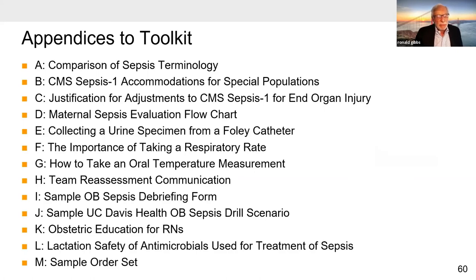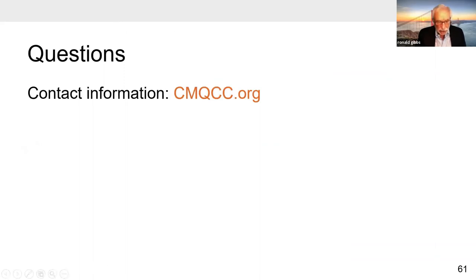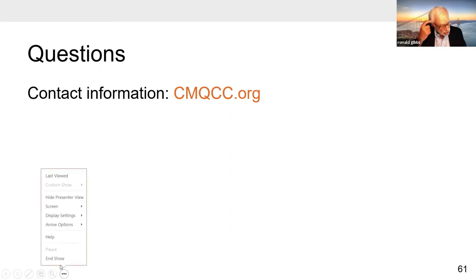There are a number of very useful appendices in the toolkit. I hope that this guide to the toolkit will prompt your institution to take a close look at it — to use a number of the tools, make them available in the electronic medical record, make antibiotics available, and work with your pharmacy team to get antibiotics to your patients rapidly. The contact source is cmqcc.org. I'll be delighted to answer any questions. Thanks very much.